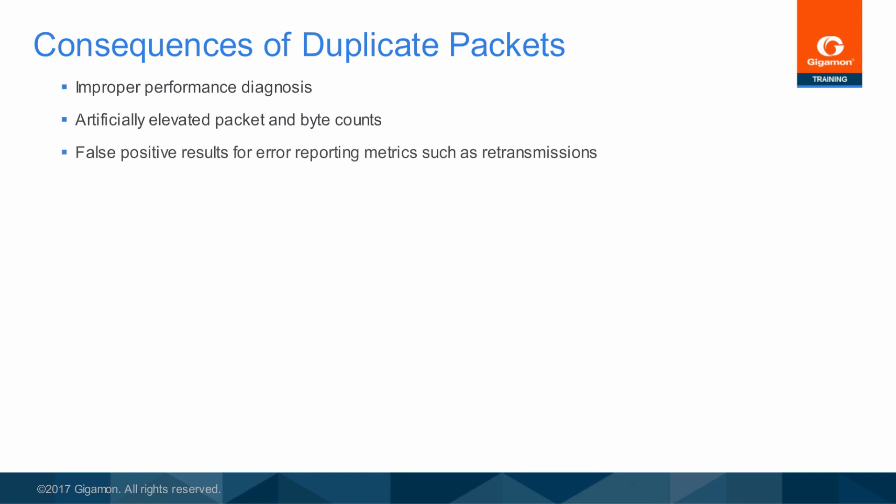When the tool sees duplicate packets, it may incorrectly interpret them as TCP retransmissions. When troubleshooting, these false positive errors can cause you to look in the wrong places. The tremendous volume of traffic being presented to the tool is challenging enough, and anything that can be done to lighten the processing load on the analysis tools will improve their efficiency and reliability.